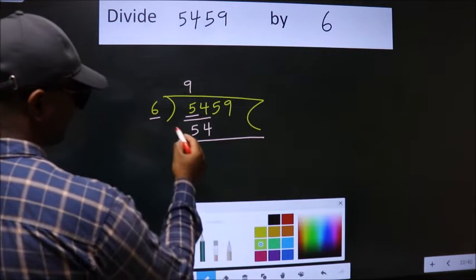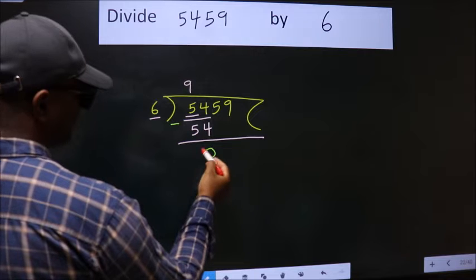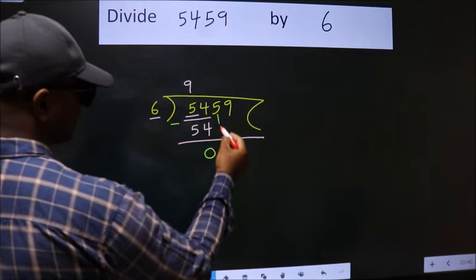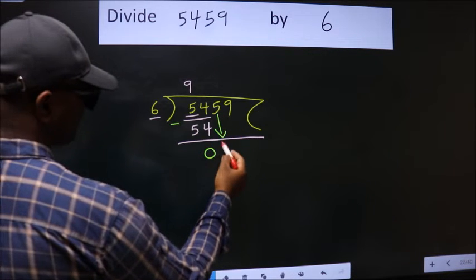Now, we should subtract. We get 0. After this, bring down the beside number. So, 5 down.